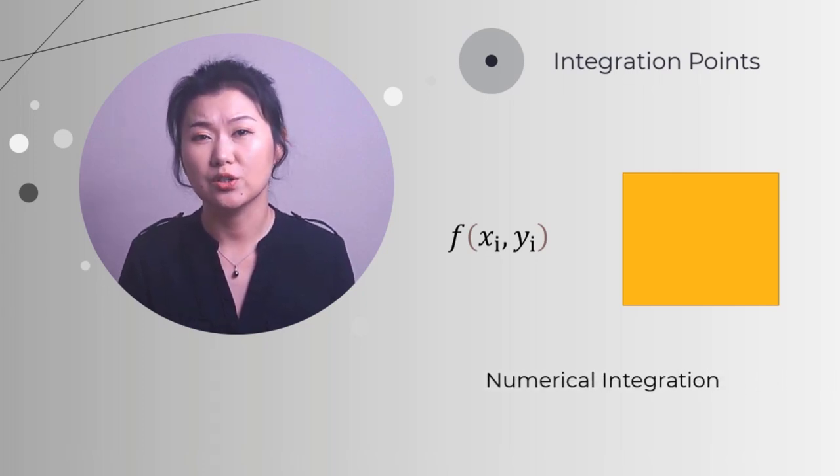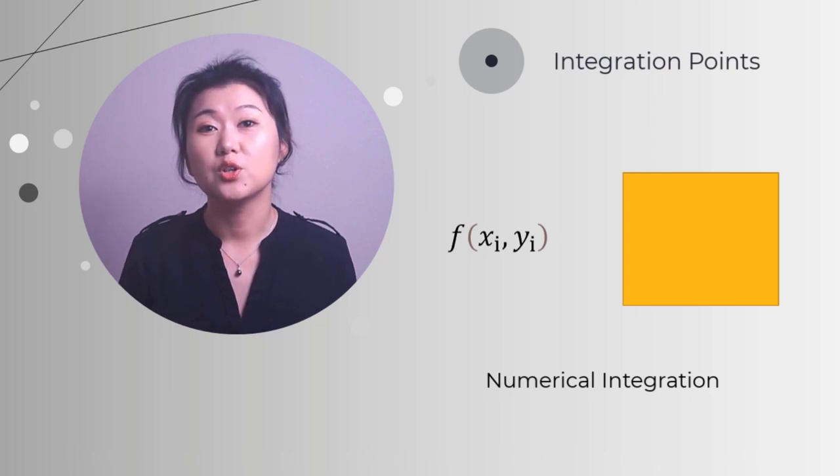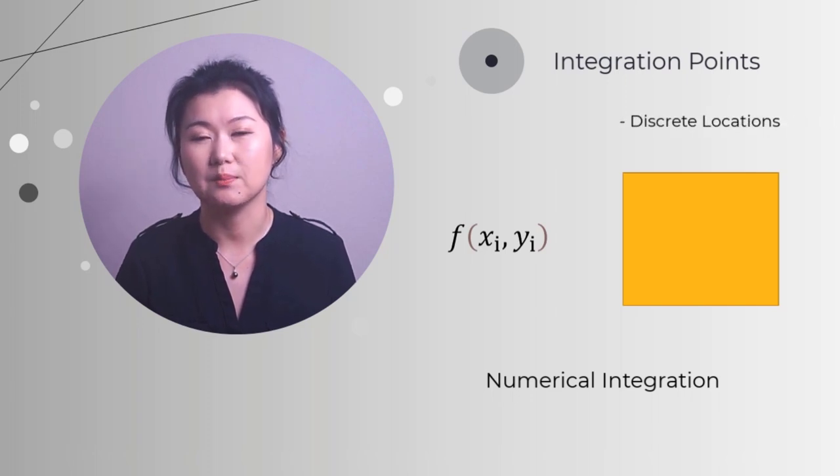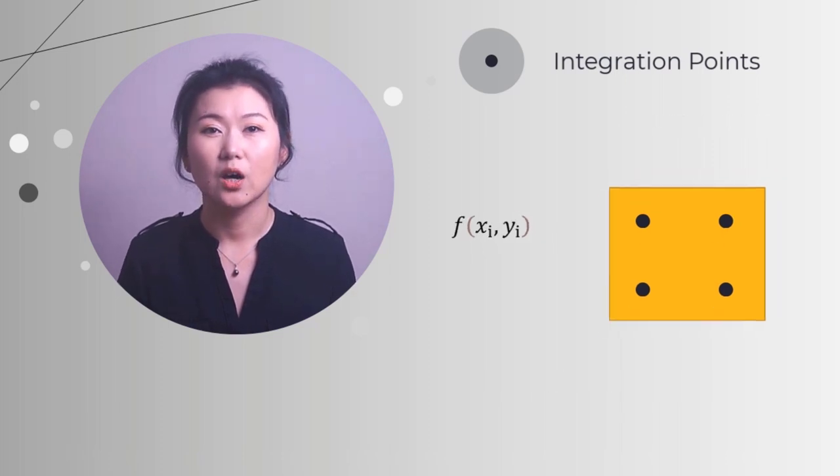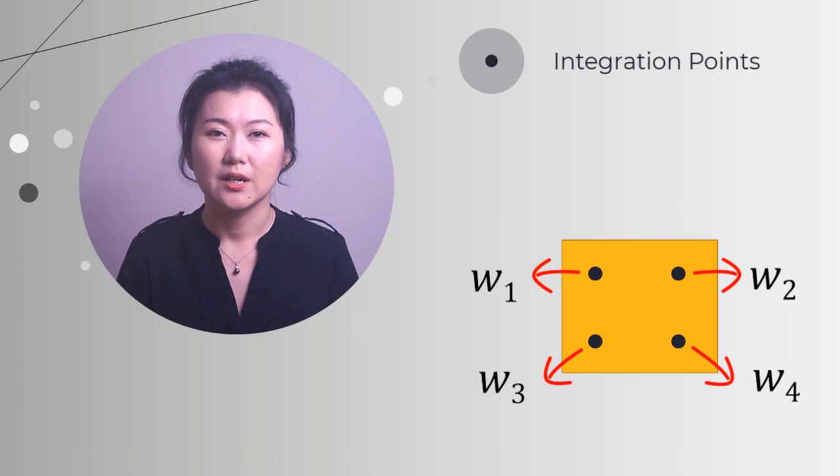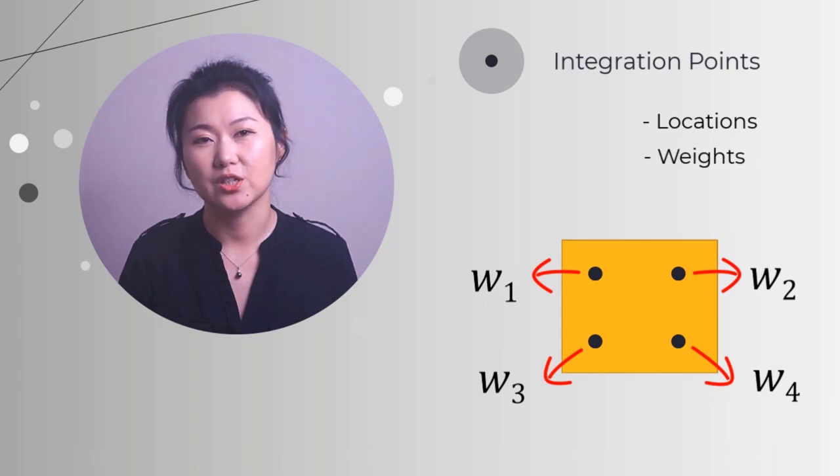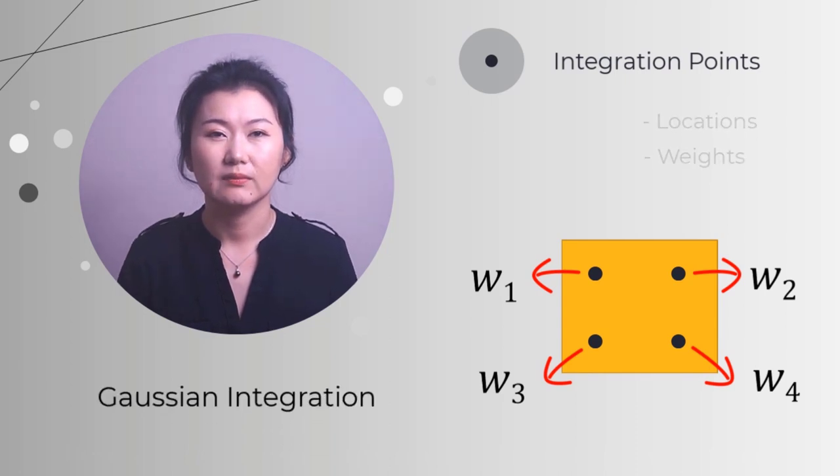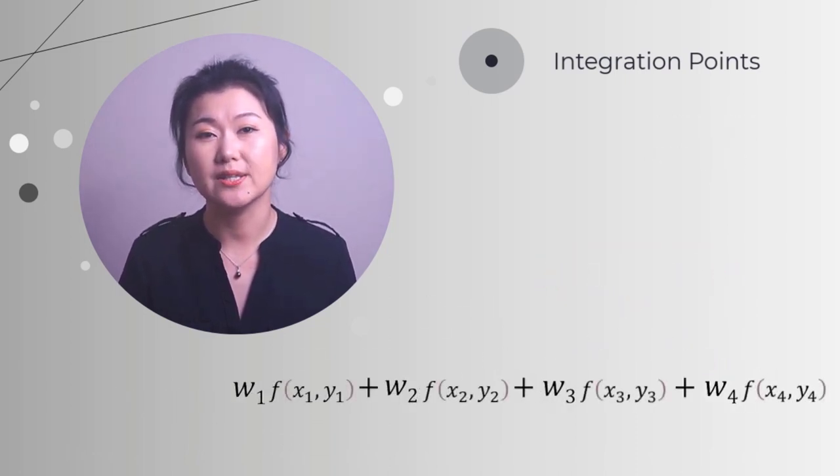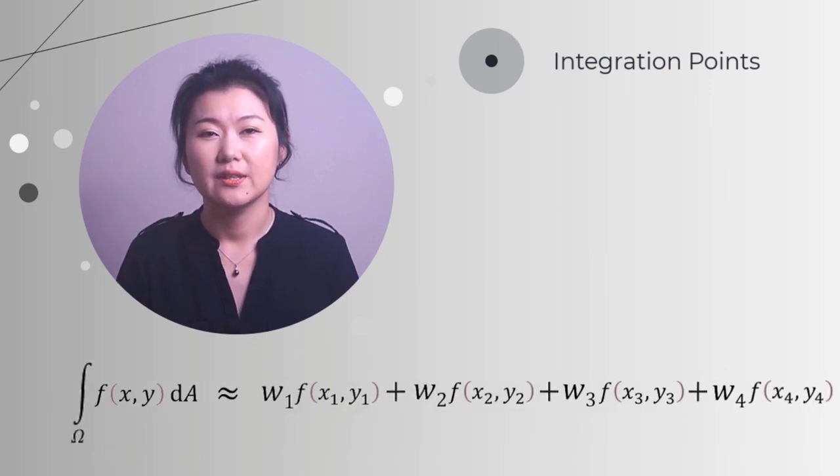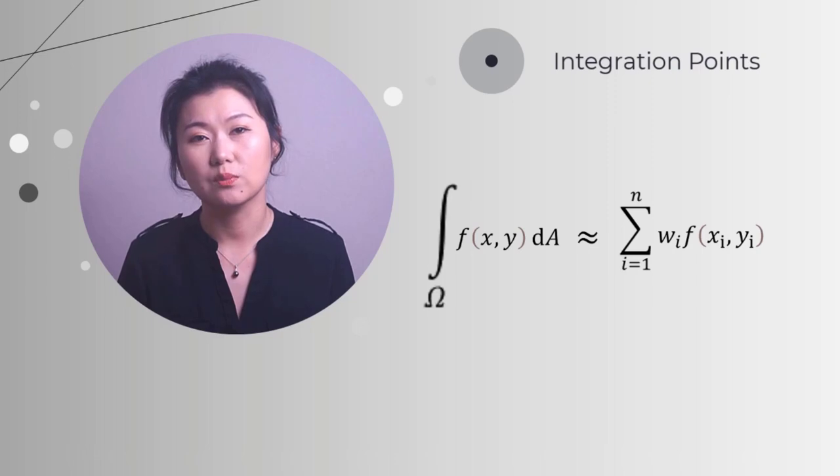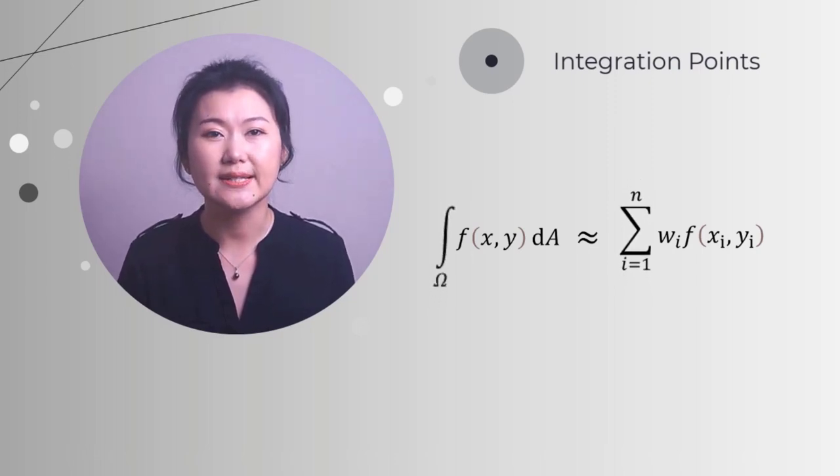Doing analytical integration calculation is usually not possible for practical mechanical problems. Instead, numerical integration is employed. To perform numerical integration, we first find values on the integration points, which are discrete locations in the element. Here, we have four integration points for this element area. Then, a weight is assigned to each integration point. The last step is to sum up the values with weights to approximate the integration value. This is how an integration calculation transforms to a summation calculation, which is much easier and faster.